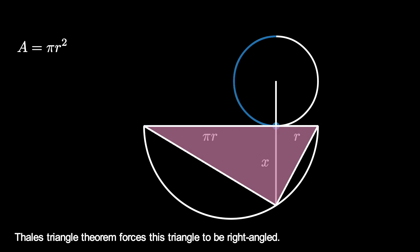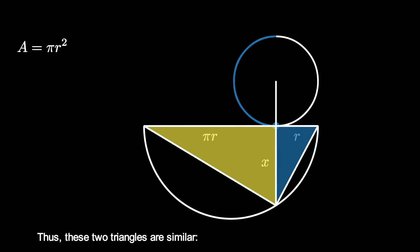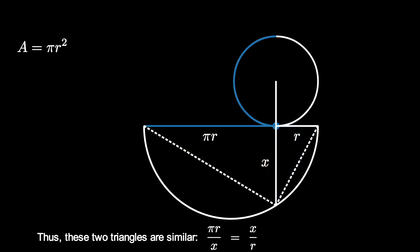Consequently, the two sub-triangles with side length x are similar. This implies that pi r over x equals x over r. Therefore, x squared equals pi r squared.